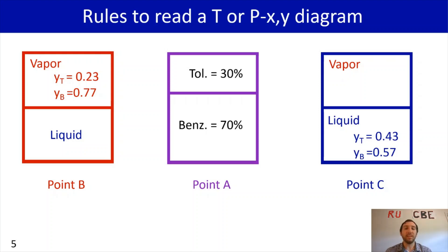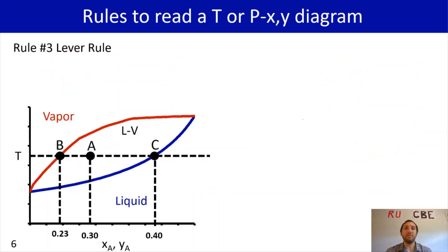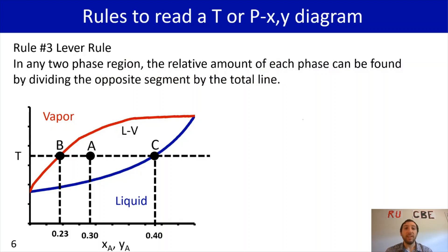The lever rule is going to help figure out how much of each phase we have — how much liquid and how much vapor. For any two-phase region, the relative amount of each phase is found by dividing the opposite segment by the total line. We have line B-A-C. The segment from A to C, since C intersects with the liquid curve, corresponds to the amount of vapor. The segment from B to A corresponds to the amount of liquid, divided by line BC.